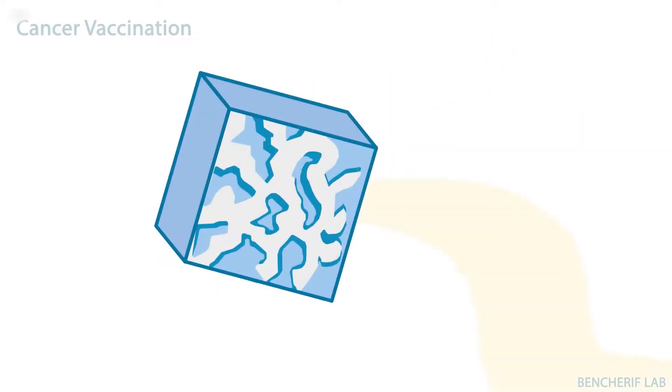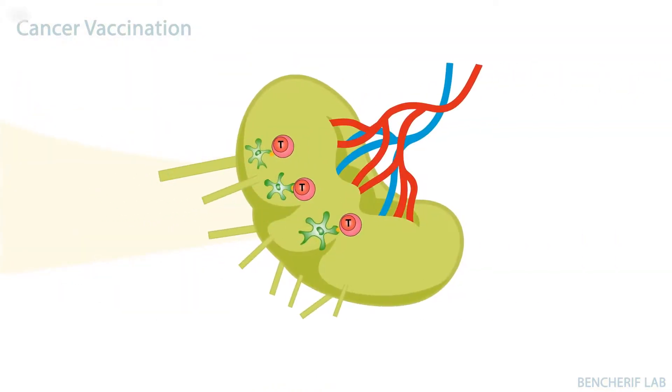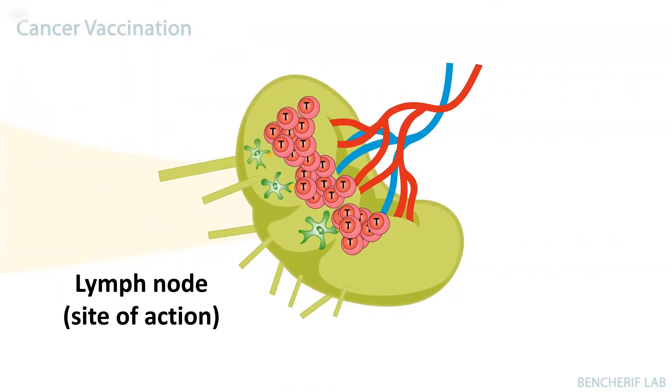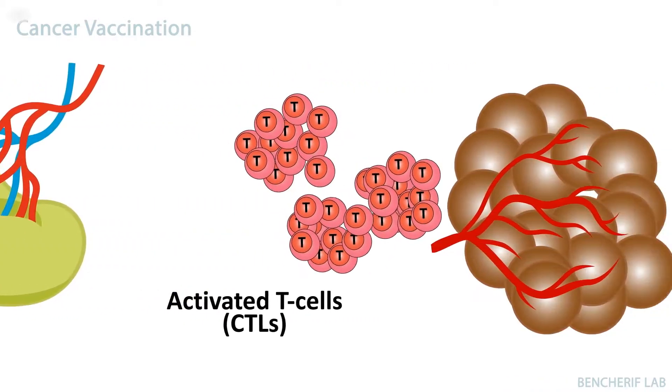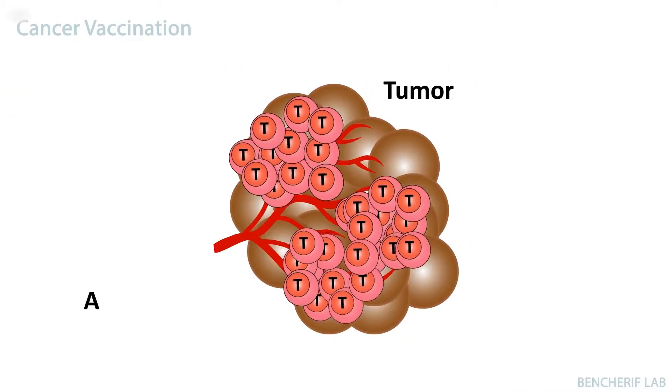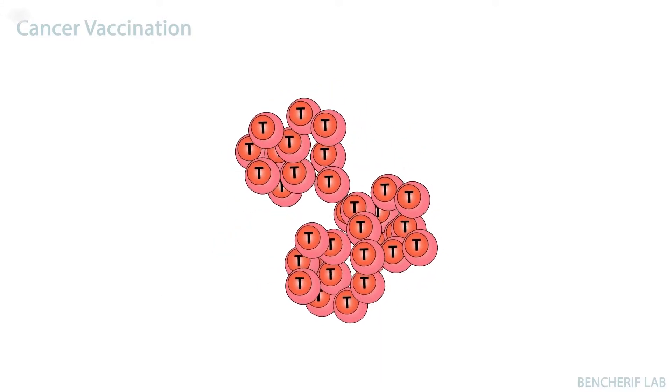When fully activated, mature dendritic cells migrate out of the cryogel and travel to the closest draining lymph nodes. Here, dendritic cells stimulate antigen-specific cancer-fighting T cells. Quickly generate a huge army of cytotoxic T cells that are ready to find and eradicate tumors throughout the body.